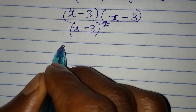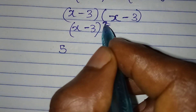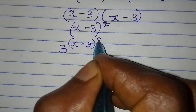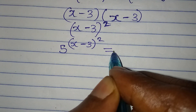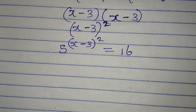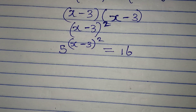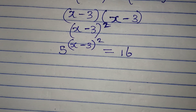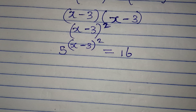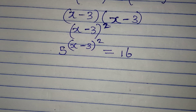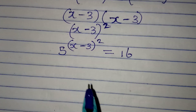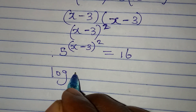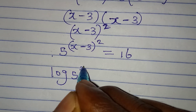In place of the power, I'm going to write x minus 3 squared, so we have 5 to the power of x minus 3 squared, equal to 16. This is the point where I take the log of both sides.